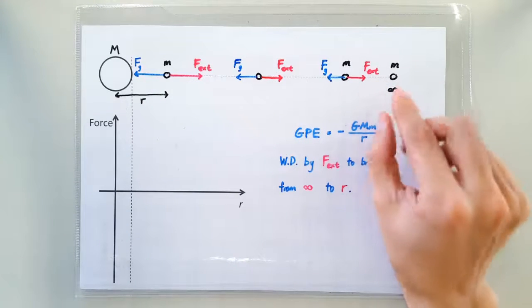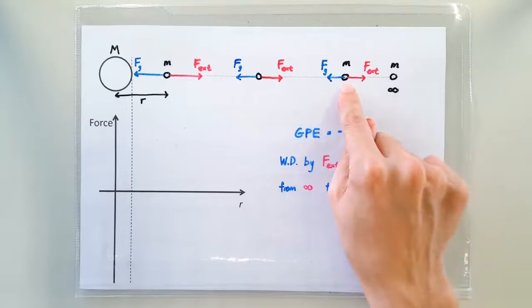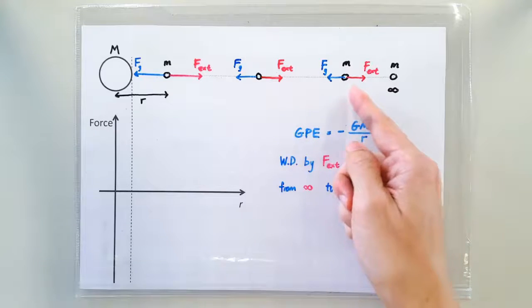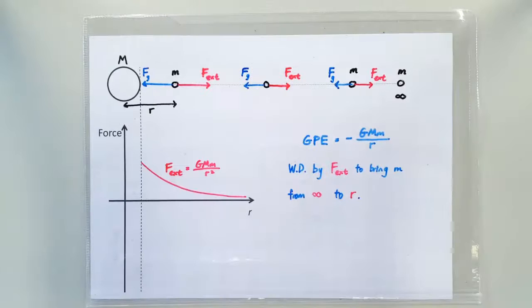And because the external force is there just to make sure that the small m does not accelerate, the external force must also become stronger and stronger as we move it towards the big mass M. So how strong must the external force be?